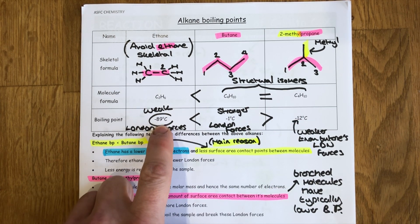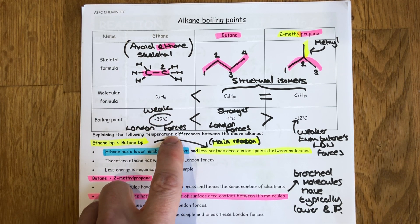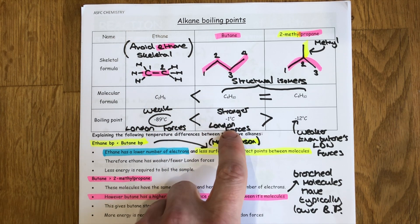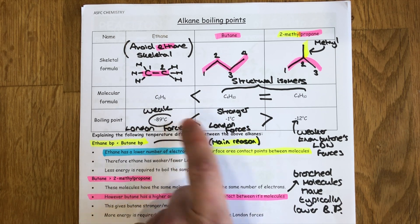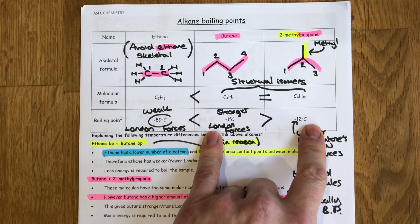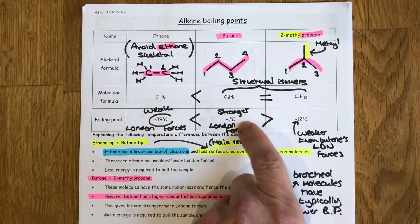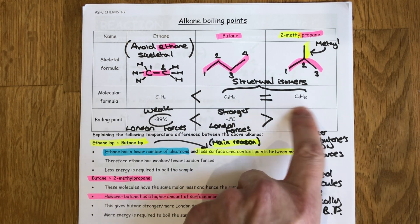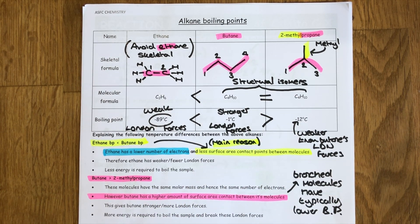We can see the impact of these London forces in the boiling points here of the three alkanes. This very low boiling point here for the ethane, minus 89 degrees C, is because the London forces are incredibly weak. Here for the butane we can see minus one, it's still pretty low but it's stronger London forces than the ethane.